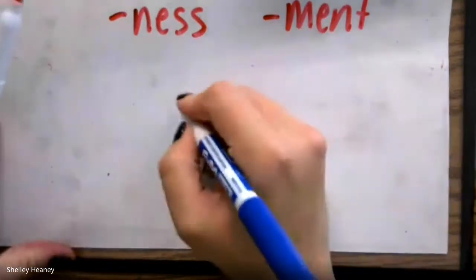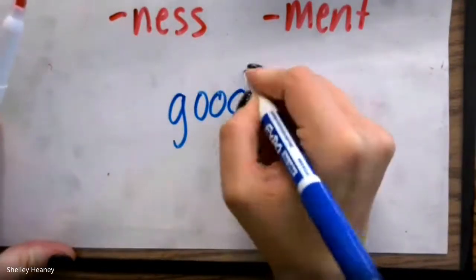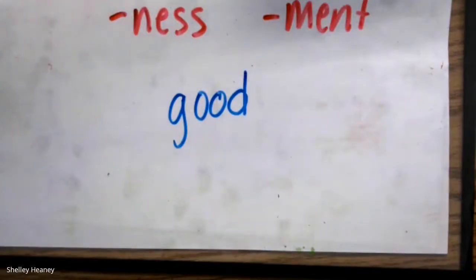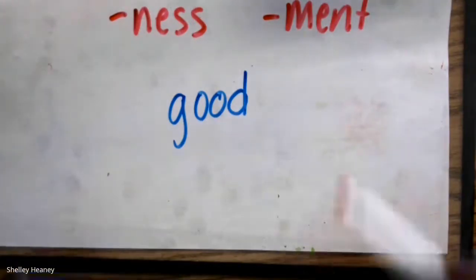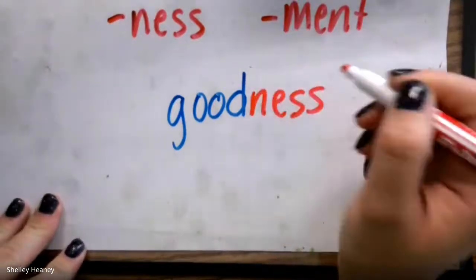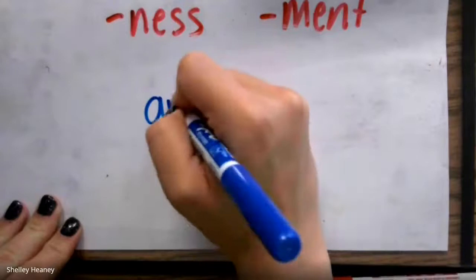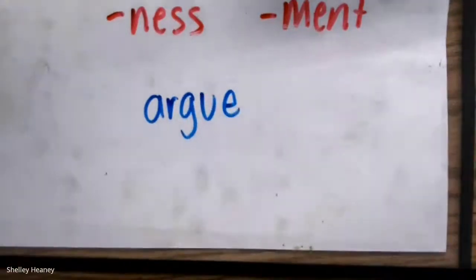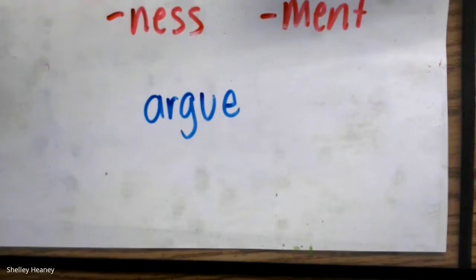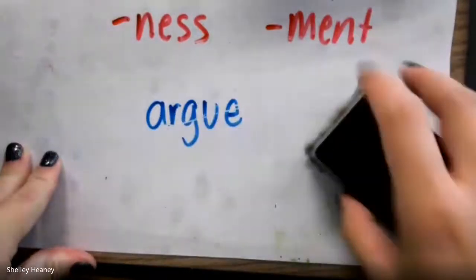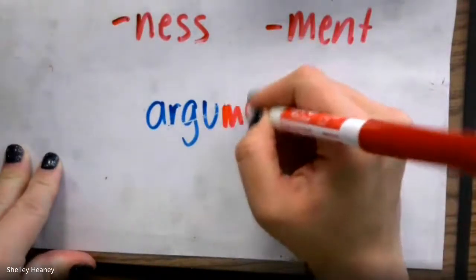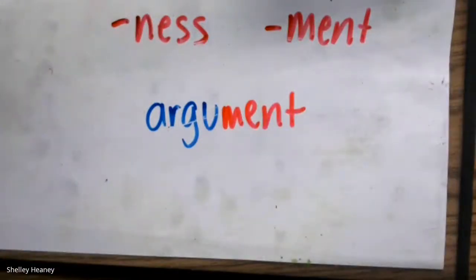Let's look at some practice examples. If 'good' is a base word, what word could I make to show quality and state — would I say 'goodness' or 'good-ment'? The word would be 'goodness.' Now, if I have 'argue' and I am trying to make a word that means doing this action, would it be 'arguments' or 'argument'? It'd be 'argument' — I'm going to drop the E and put M-E-N-T. An argument is when you are doing the arguing.